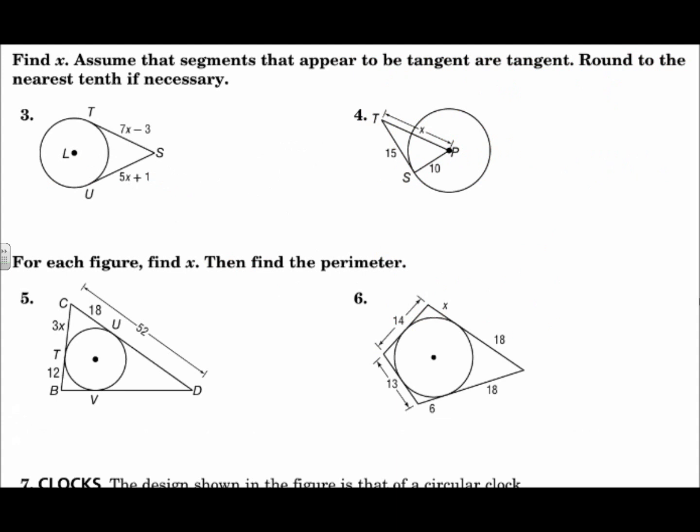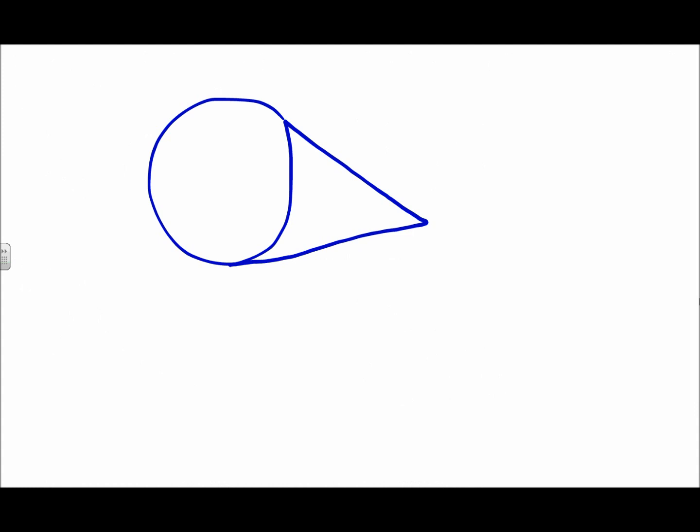Find x. Assume that segments that appear to be tangent are tangent. Round to the nearest tenth if necessary. Here we have a second rule. If you have two tangents that intersect outside the circle at the same point, then those tangents are congruent. If that's 5, then that one is 5. That's another property of tangents.